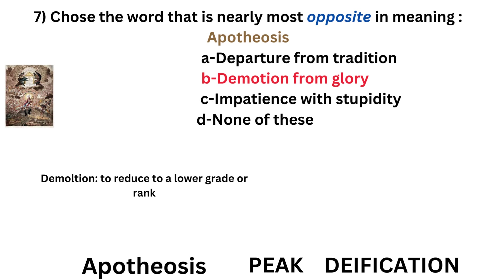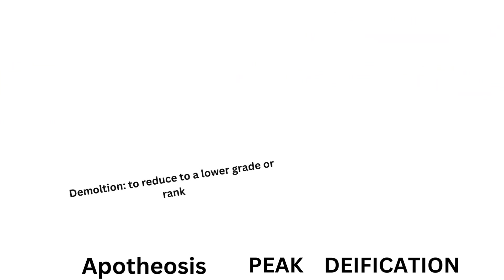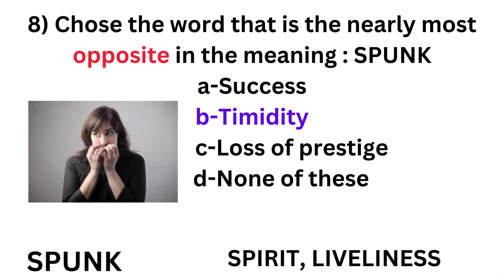Apotheosis means peak, so the opposite of apotheosis is option B: demotion from glory. Demotion means to reduce to a lower grade or rank. So the most opposite of apotheosis is demotion from glory, option B.